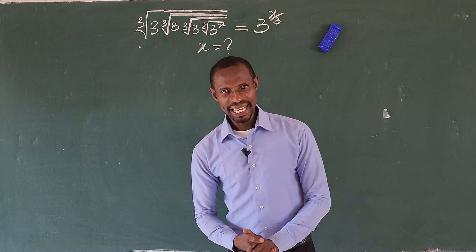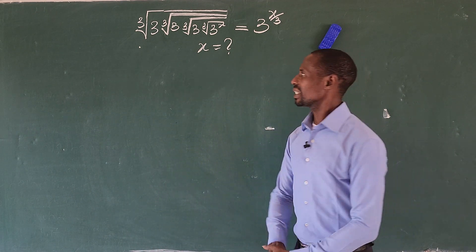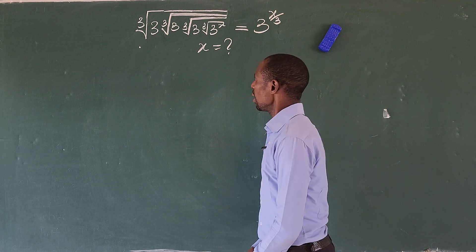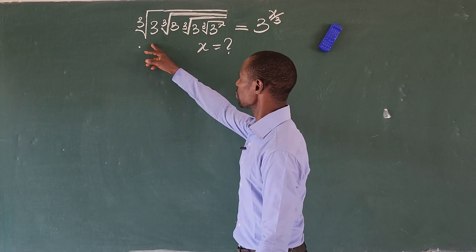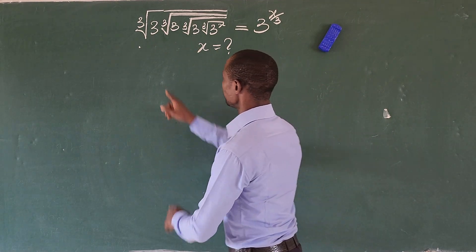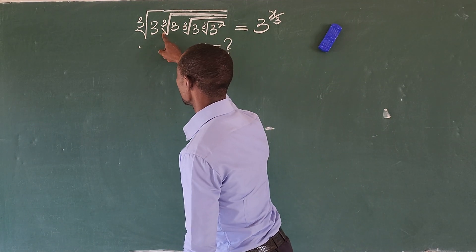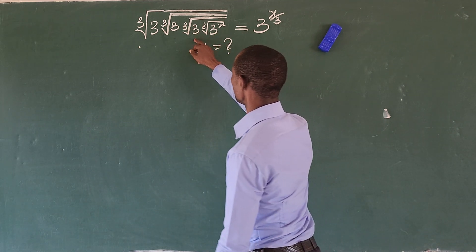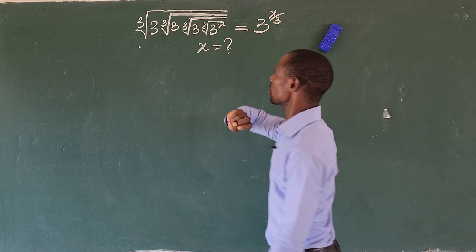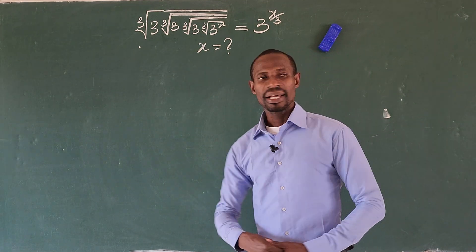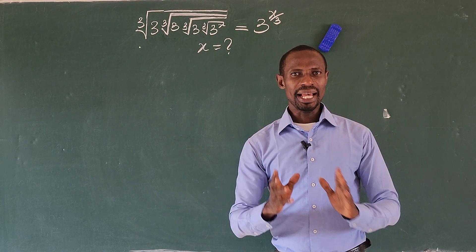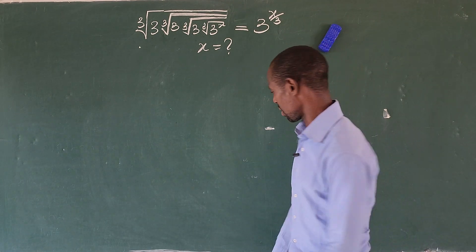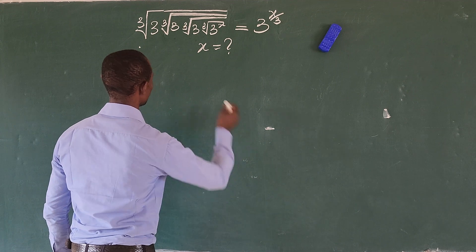Hello my good people, here we have another math challenge. Look at this math problem — it's a radical equation, cube root. We have the cube root, and under it we have 3 times the cube root of 3 times the cube root of 3 times the cube root of 3 to the power of x, equal to 3 to the power of x all over 3. What is the value of x? Let's go gradually and systematically.